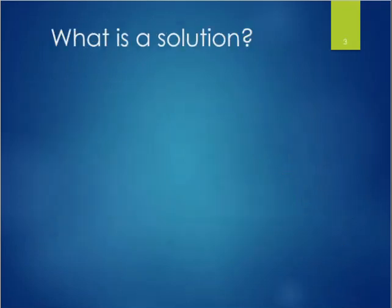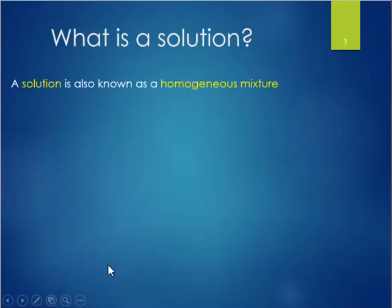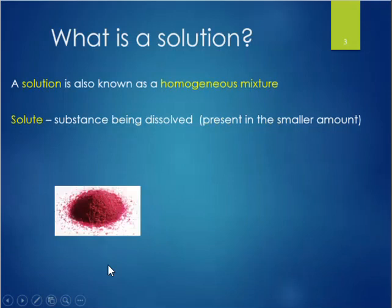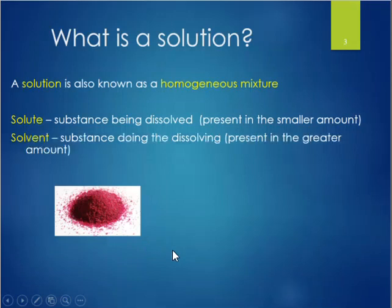Let's start by asking ourselves the question: what is a solution? A solution is also commonly referred to as a homogeneous mixture and it consists of two parts. The first part is the solute — the substance being dissolved, and it's often present in the smaller quantity. Here we have an example of a solute in powder form, specifically cobalt(II) chloride. We're going to take the solute and immerse it in the second part of the solution called the solvent.